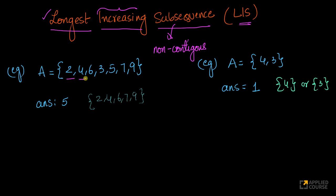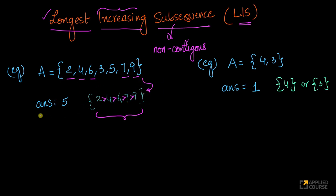For example, if I take elements 2, 4, 6, I can't take 3 because 3 is less than 6. I can only take elements greater than 6 now — so 7, 9. If I take these 5 elements and construct a new array, all elements are strictly in increasing order. This is a valid subsequence because the order has not been changed. We have 2 before 4, 4 before 6, and so on. So 2 < 4 < 6 < 7 < 9, and this is the longest increasing subsequence with length 5.